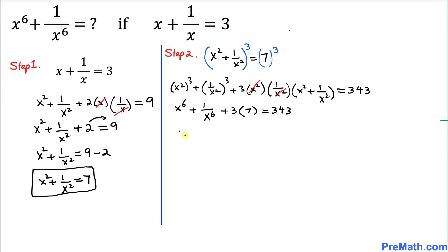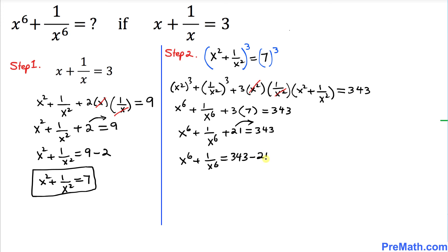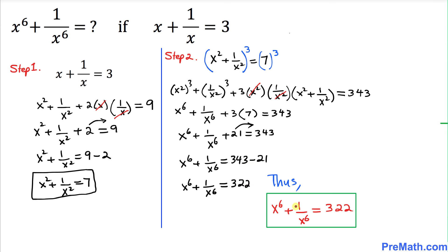Simplifying further: x power 6 plus 1 over x power 6 plus 21 equals 343. Moving 21 to the right hand side gives x power 6 plus 1 over x power 6 equals 343 minus 21, which is 322. That is our final answer. Thanks for watching, and please don't forget to subscribe to my channel for more exciting videos.